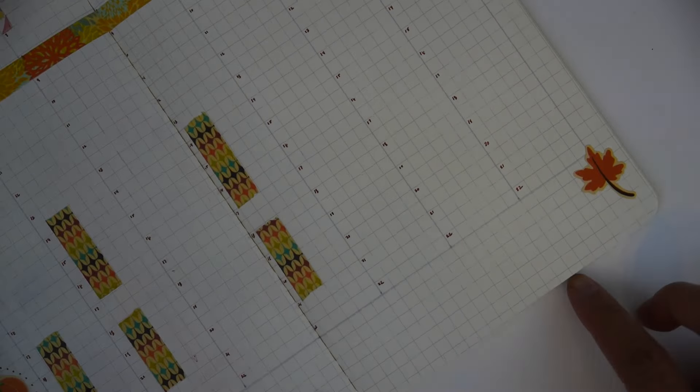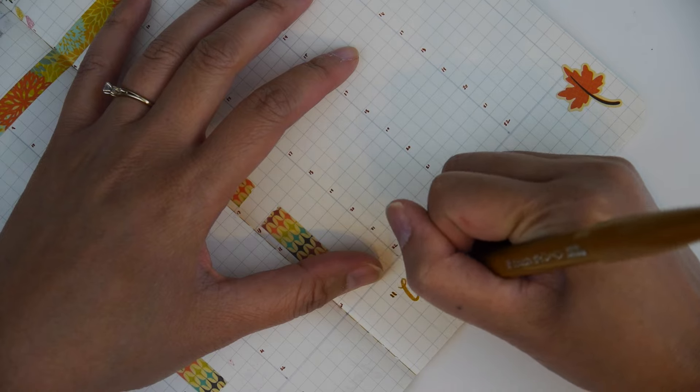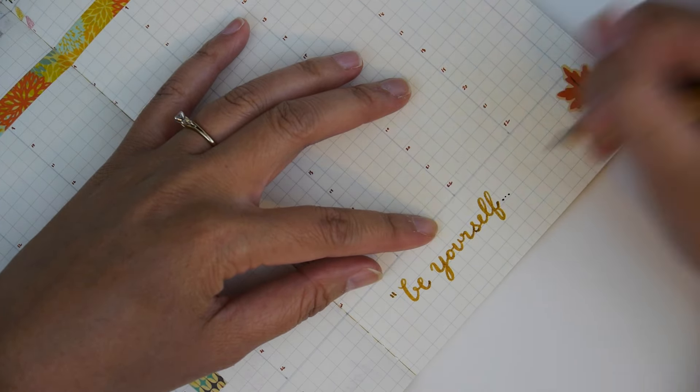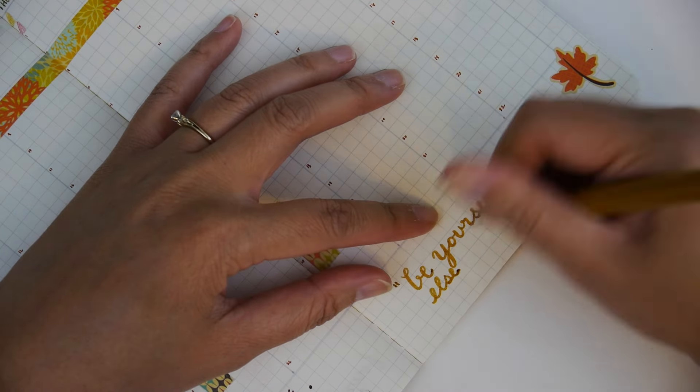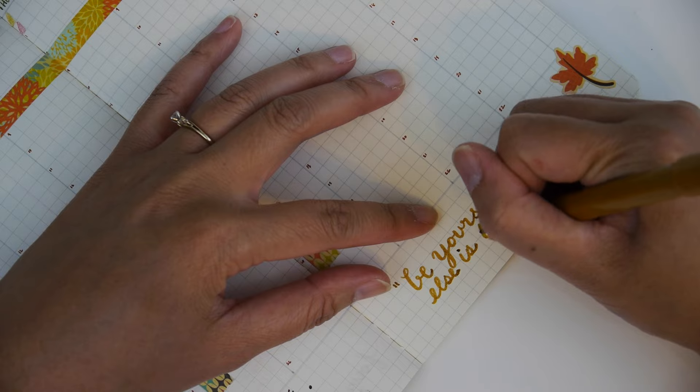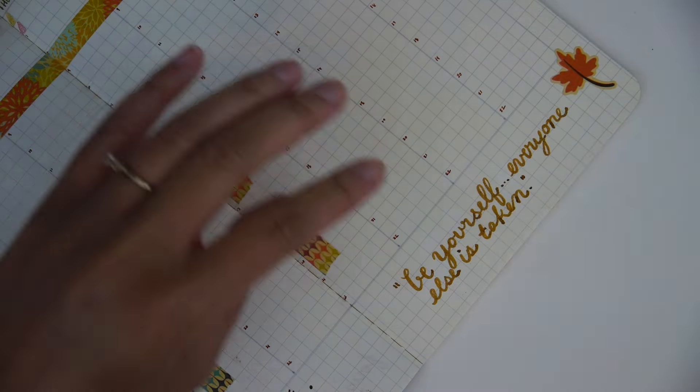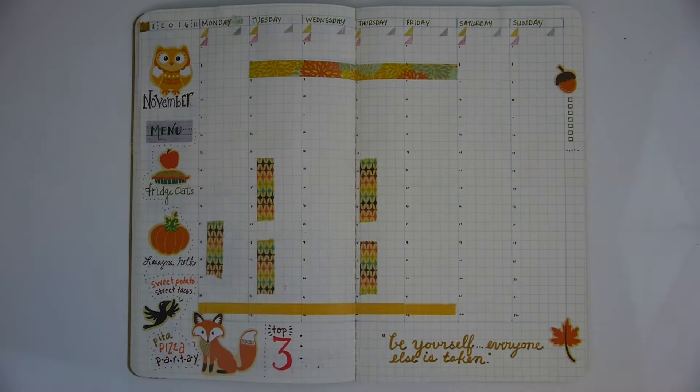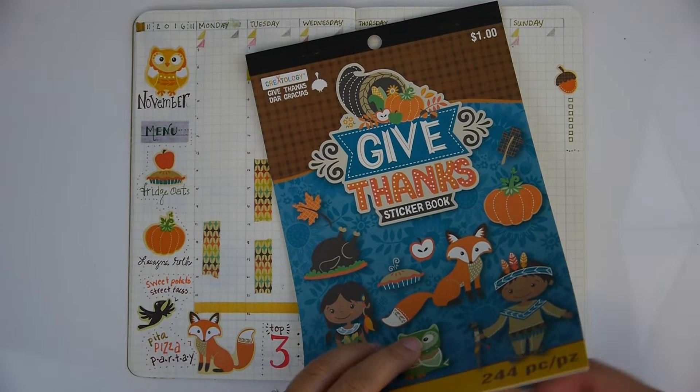And then I have space for a quote here. I saw this when I was walking through the grocery store in a magnet they were trying to sell. And I thought, I'm just going to remember that and write it down on my planner. I think it's just a nice thing to remember for yourself. Who else you're going to be? You can only be who you are. So I didn't put the author because it's attributed to Oscar Wilde, but I don't think that's accurate. At least according to the internet.